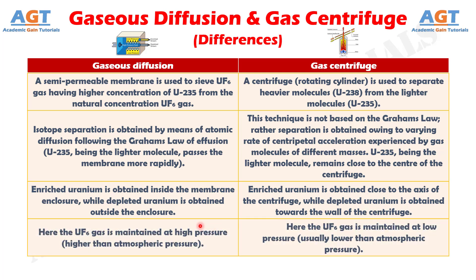Difference number 4. In the gaseous diffusion process, the uranium hexafluoride gas is maintained at high pressure, higher than atmospheric pressure. In the gas centrifuge process, the uranium hexafluoride gas is maintained at low pressure, usually lower than atmospheric pressure.